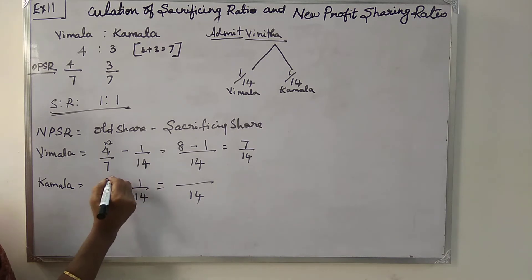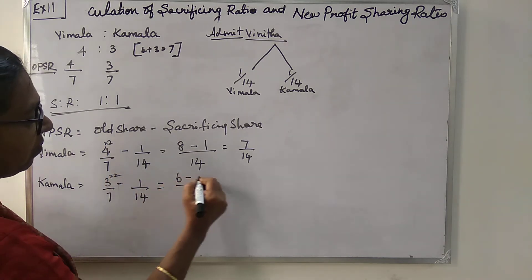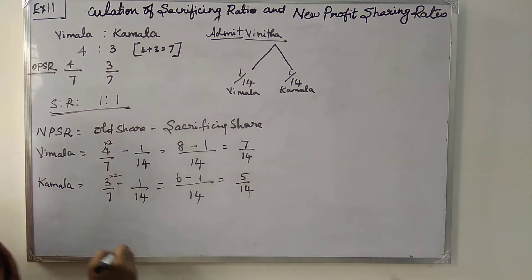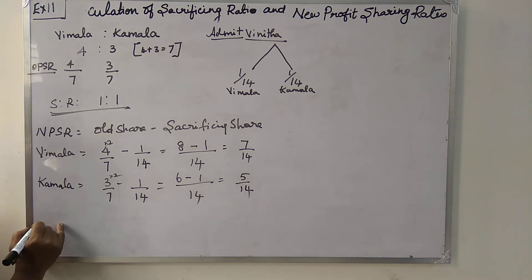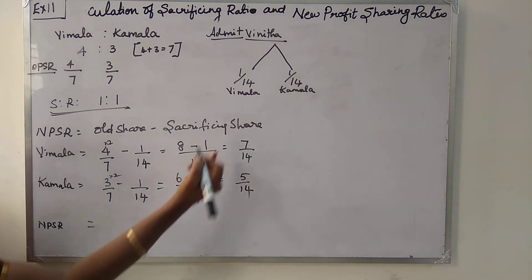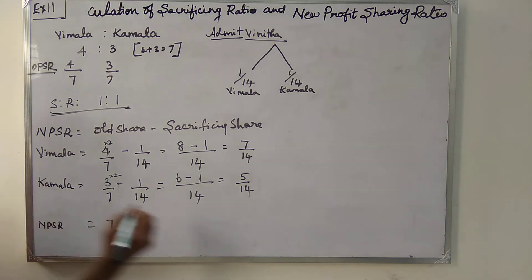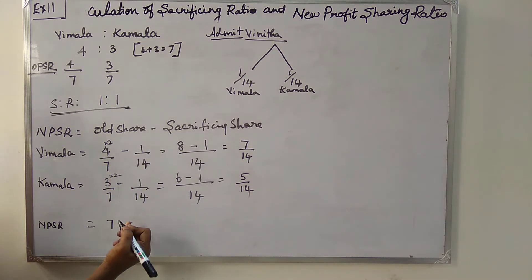So the new profit sharing ratio for Vimala and Kamala is 7:5, giving us 7/14 and 5/14. The new profit sharing ratio is 7 is to 5.